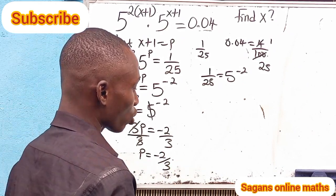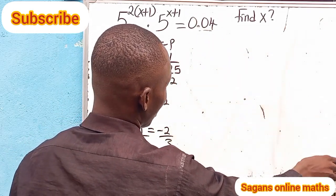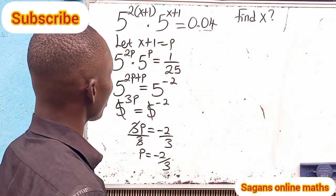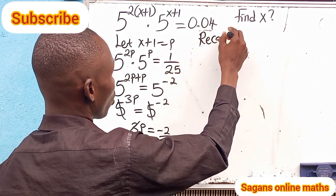But the question did not ask us to find p. The question asked for the value of x. Now you may wonder why we solved for p first. This is so the problem can be simplified.